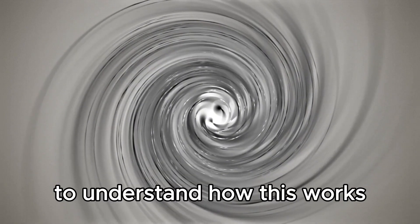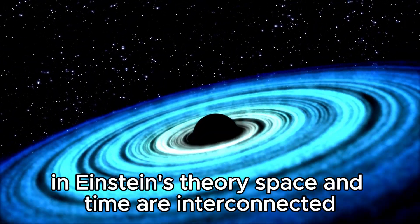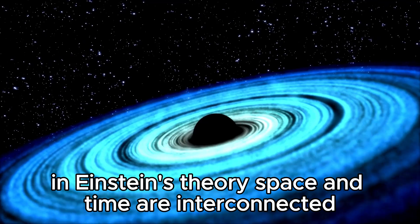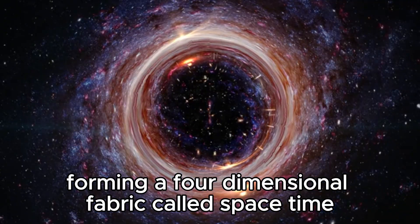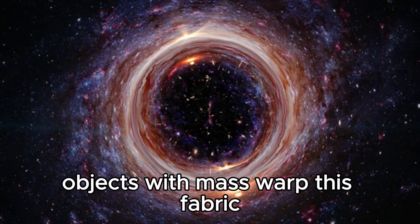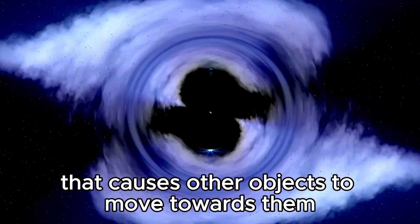To understand how this works, consider the concept of space-time in Einstein's theory. Space and time are interconnected, forming a four-dimensional fabric called space-time. Objects with mass warp this fabric, creating a gravitational field that causes other objects to move towards them.